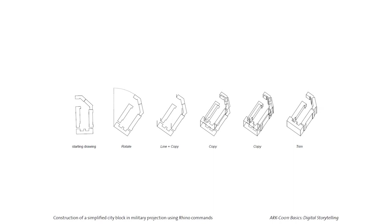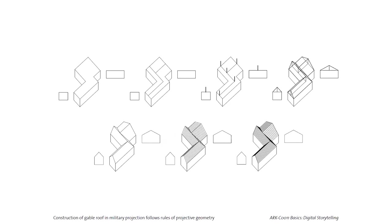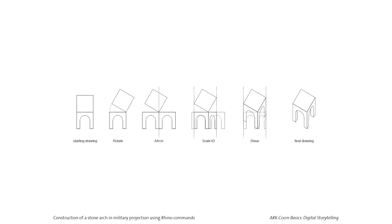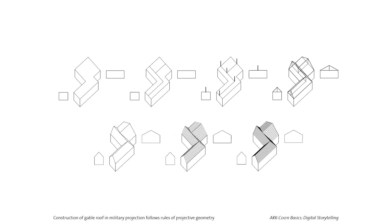Alternatively, I could create a three-dimensional model and then automatically generate the projection from it — I'll show you how to do that too, but that requires going into 3D modeling and I don't want to start with that now. All these rules are valid also if you do it on paper, except that on paper you can't easily do Scale 1D — squeezing part of a drawing — or shearing. Because we work in the digital realm, we can move lines around freely.